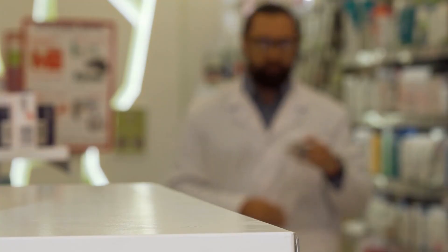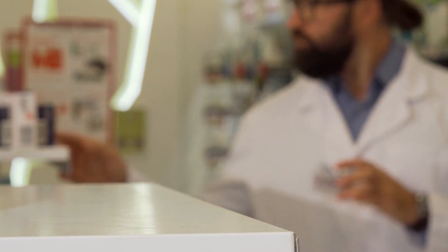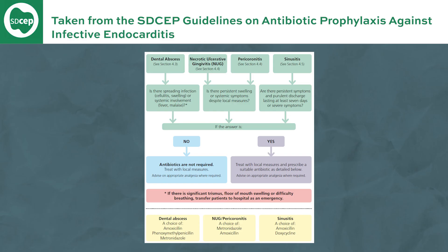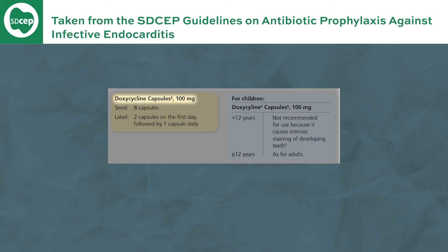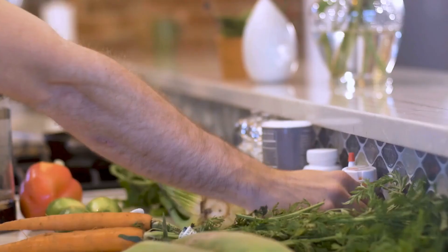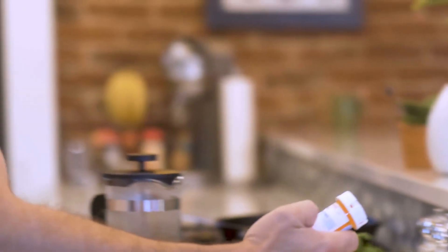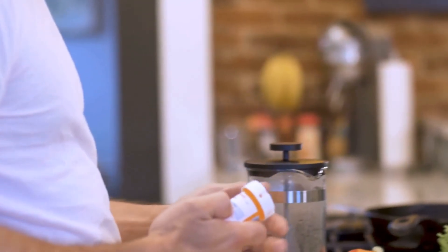Finally, the last condition to discuss is sinusitis. Antibiotics were previously more commonly prescribed for this, but new guidelines say to only prescribe them if there are persistent symptoms or purulent discharge lasting at least seven days, or severe symptoms. The recommendation is amoxicillin 500mg three times a day for seven days, or if allergic to penicillin, doxycycline 100mg — two capsules on the first day followed by one capsule for the next six days. Patients should also be advised on menthol steaming, painkillers, and over-the-counter decongestants.